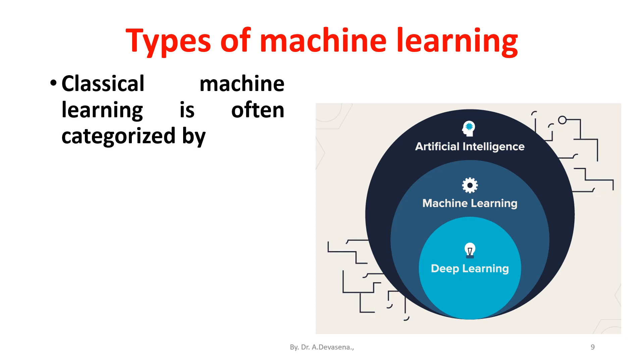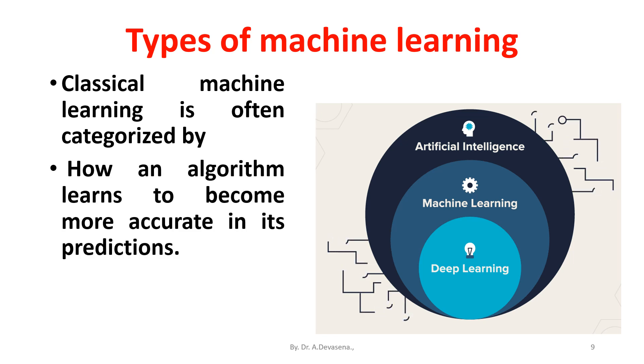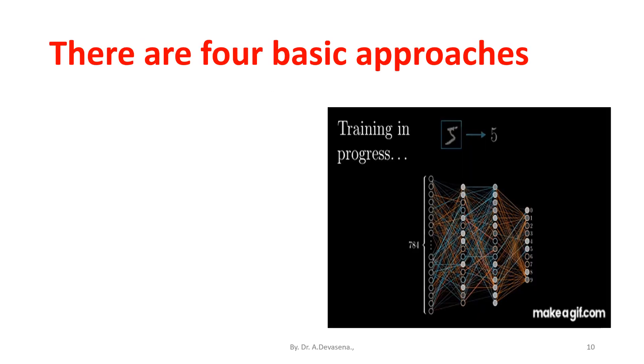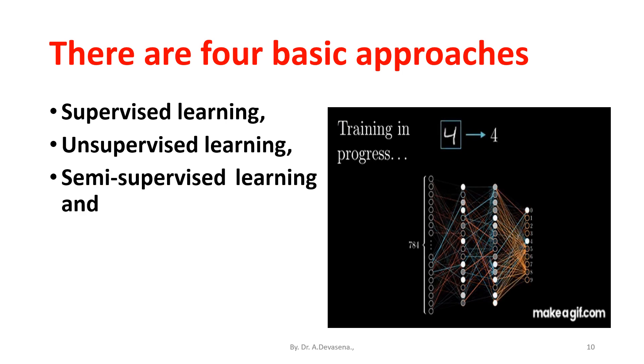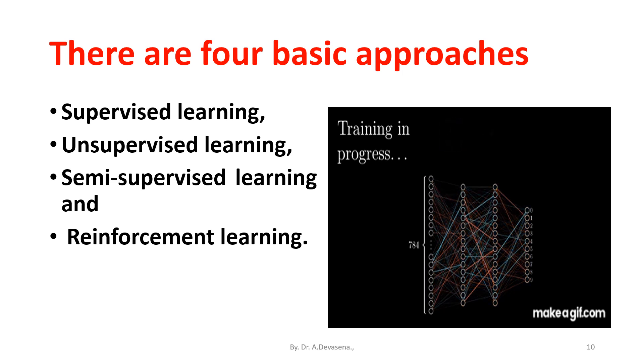Classical machine learning is often characterized by how an algorithm learns to become more accurate in its predictions. There are four basic approaches for studying machine learning: supervised learning, unsupervised learning, semi-supervised learning, and reinforcement learning.